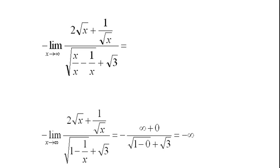As soon as we get to here, if I take x and make it larger without bound, this is going to go to zero. This is going to go to zero. This is going to be the square root of one, which is one plus the square root of three. So I'll end up with a constant on the bottom, and this is going to grow without bound or go to infinity. So I'll end up with infinity plus zero over one plus the square root of three.